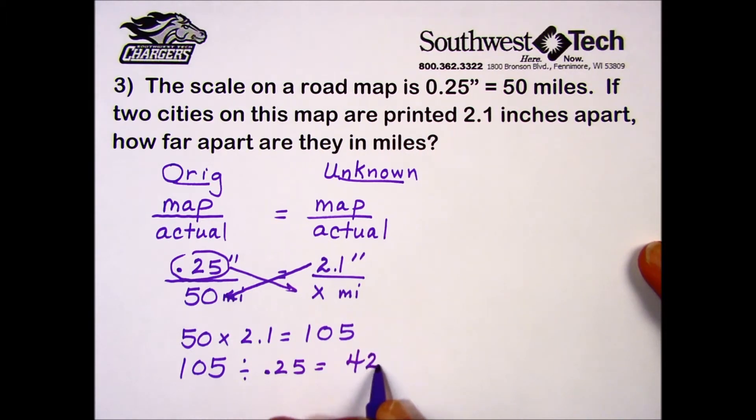When we do the division, we end up with 420 for our missing value, which represents the actual number of miles that a distance of 2.1 inches represents on the map.